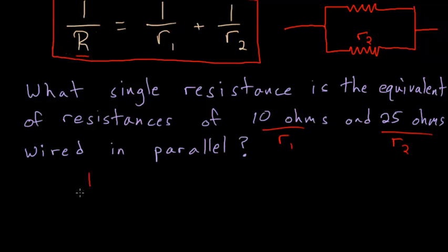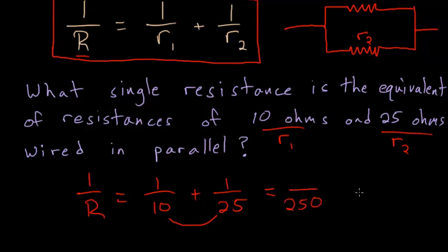If we rewrite this, 1 over R is equal to 1 over 10 plus 1 over 25. Here we just need to add these two fractions. Finding a common denominator, you can always just multiply the bottom two numbers. So 250 can be our denominator.